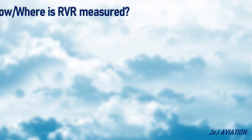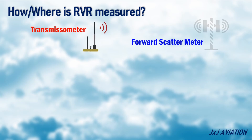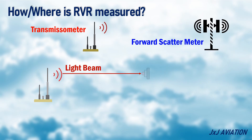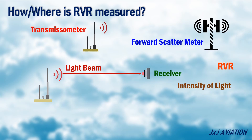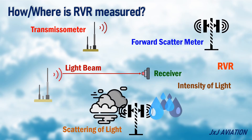How and where is RVR measured? RVR is normally measured by using instruments such as a transmissometer and forward scatter meter. The transmissometer emits a light beam to a receiver that measures the intensity of the light to give the RVR value. The forward scatter meter measures the scattering of light caused by particles suspended in the air, such as fog or moisture.